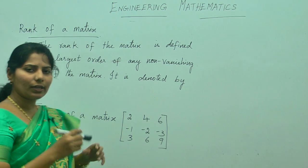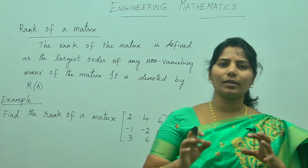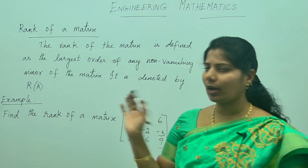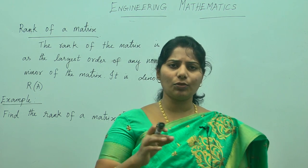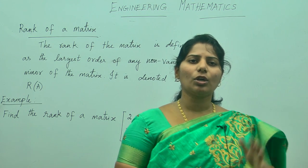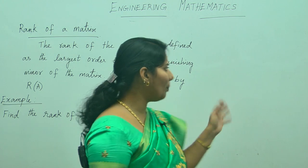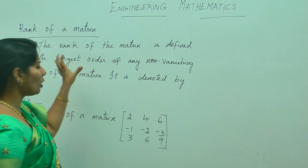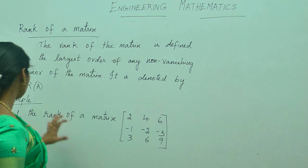Suppose if they are giving a matrix, we need to get the upper triangular matrix to solve the rank of a matrix. What do you mean by upper triangular matrix? If you are taking a square matrix, the elements below the diagonal should be zeros. That is the upper triangular matrix, and in finding the rank of a matrix, I am going to apply this method.